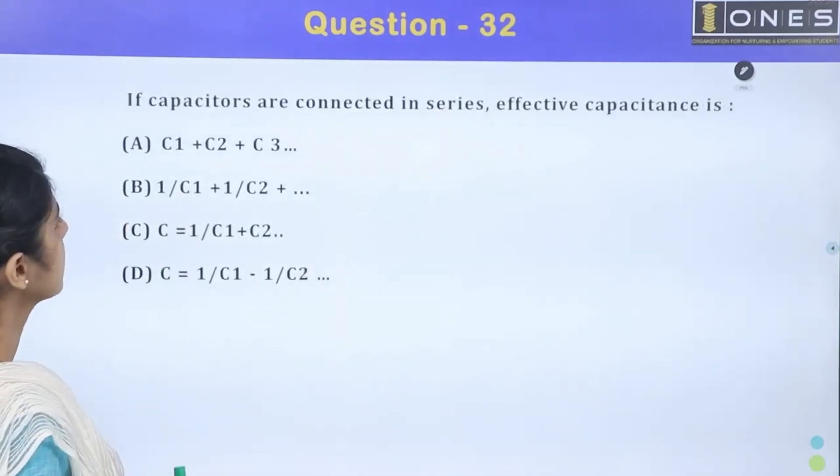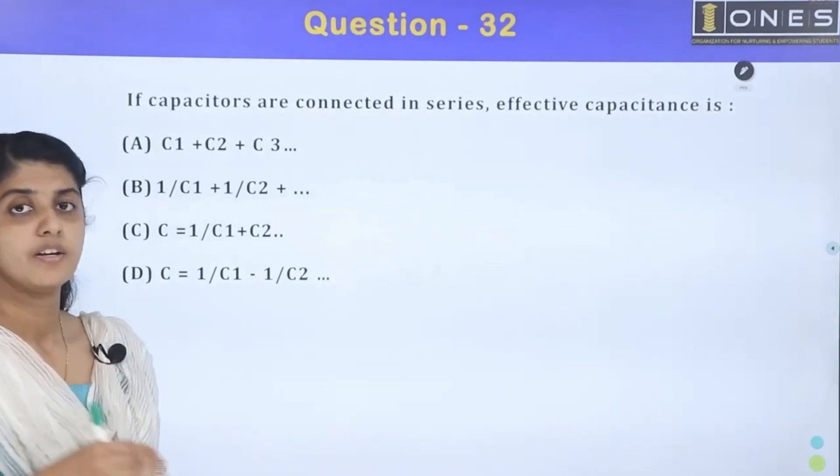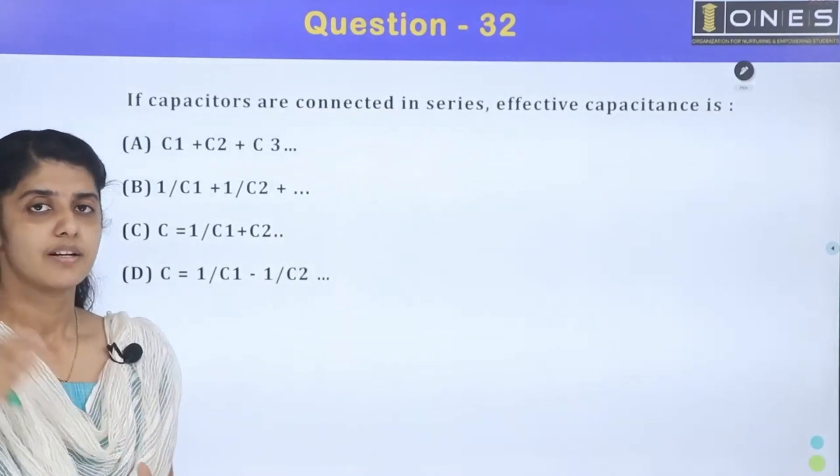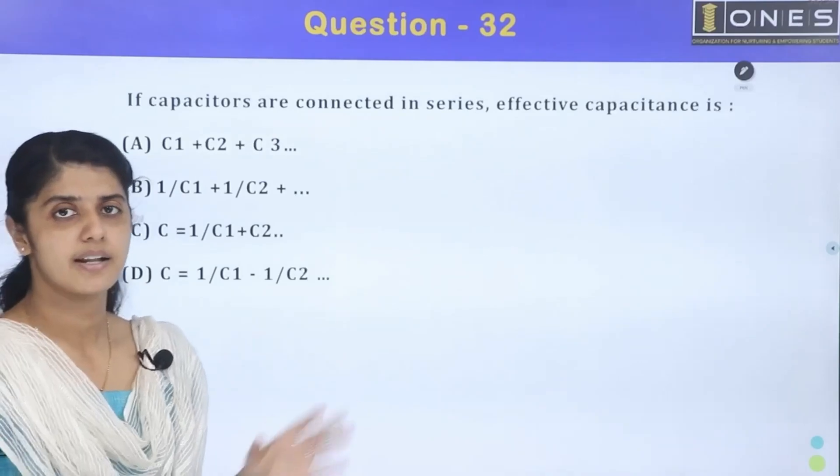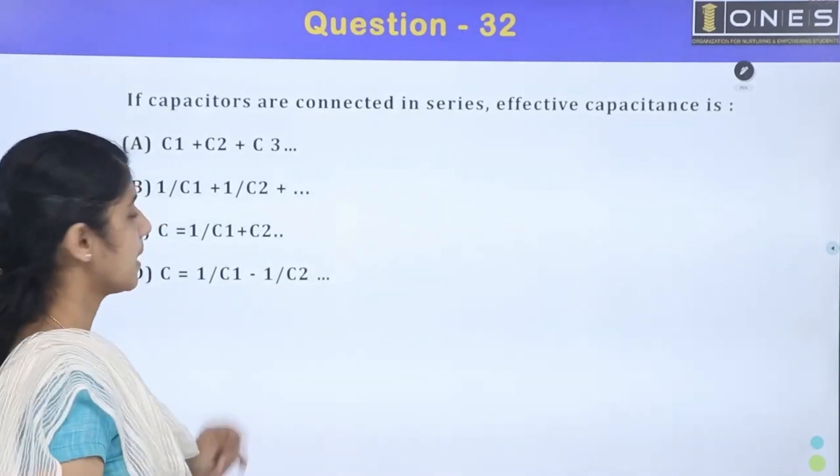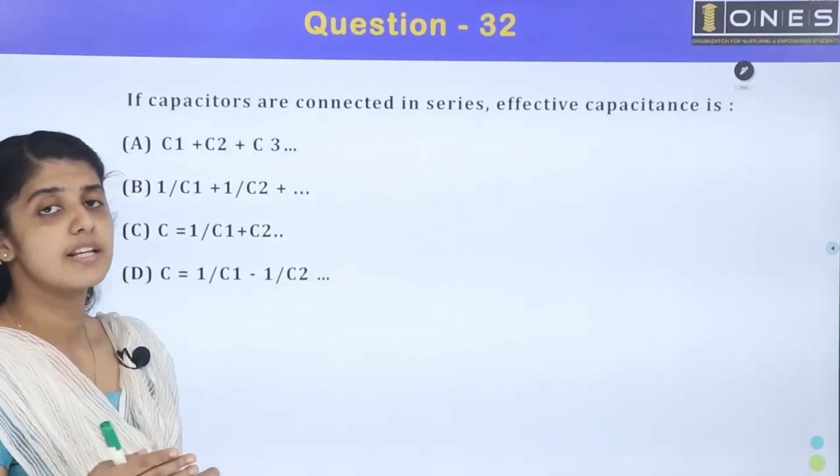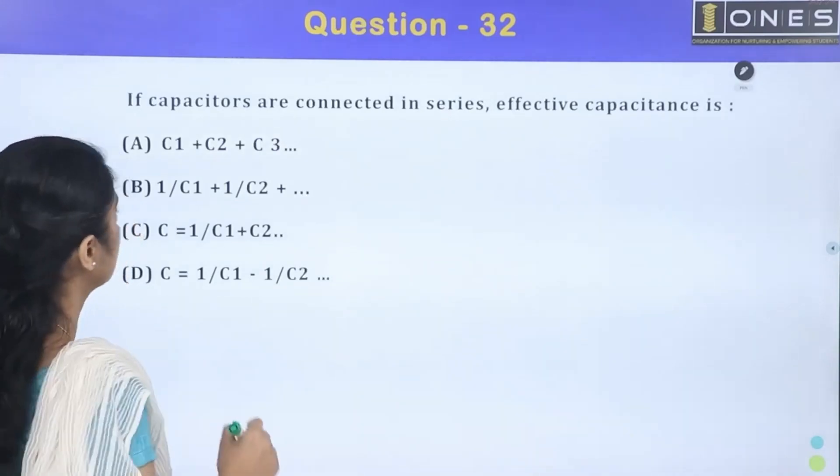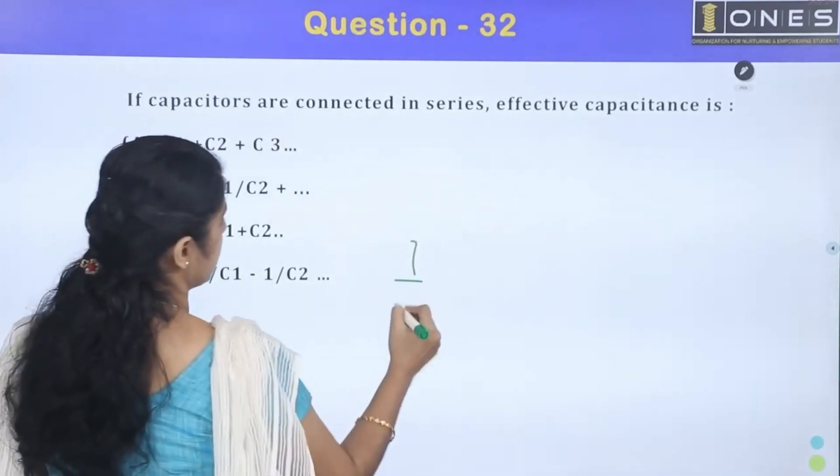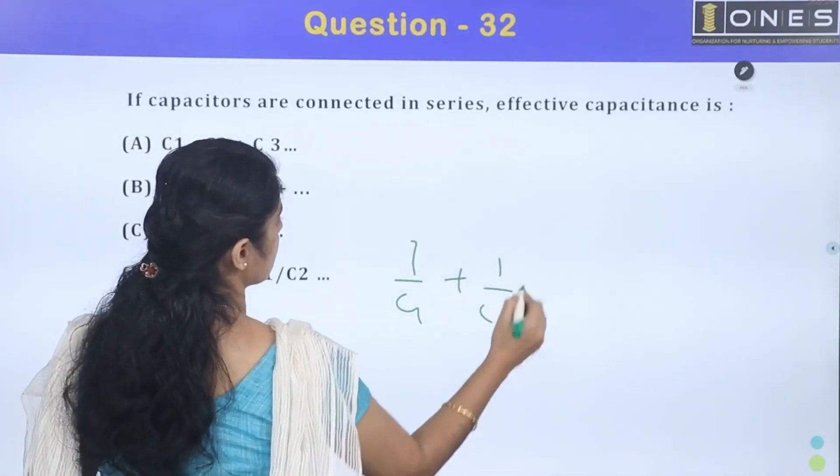If the capacitors are connected in series, effective capacitance... Series connection of capacitance. For series connection of capacitance, equivalent value is 1/C = 1/C1 plus 1/C2 plus etc.